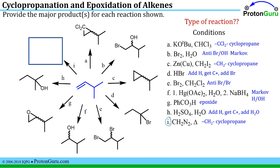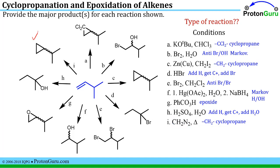Finally, step I is one of the ways to make a cyclopropane by transferring a CH2 group, giving this product. A squiggly line can be used to show the group could point forward or backward. Remember that both enantiomers are achiral in case you're asked to indicate that. With that, we've finished all nine reactions.